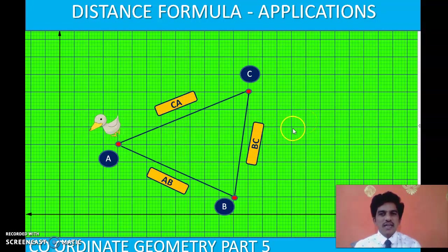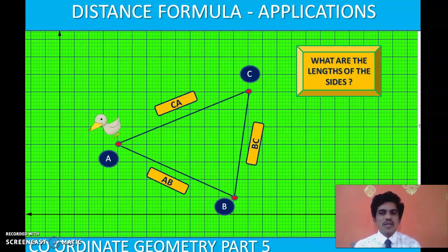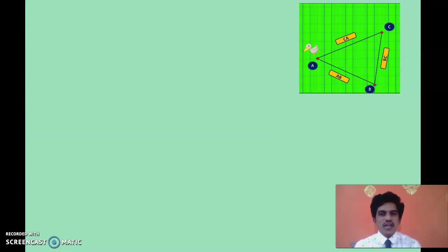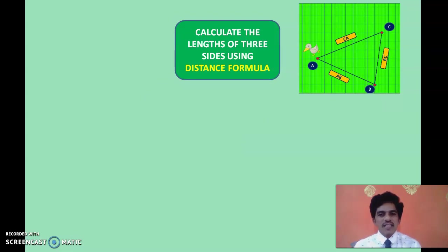Now we will apply this distance formula to solve various problems involving triangles. When you have a triangle, you will be asked to calculate the lengths of the sides using the distance formula — three times because you have 3 sides. After calculating the sides, you have to tell which type of triangle it is: equilateral, isosceles, or scalene. The distances from A to B, B to C, and C to A become the lengths of sides AB, BC, and CA respectively.